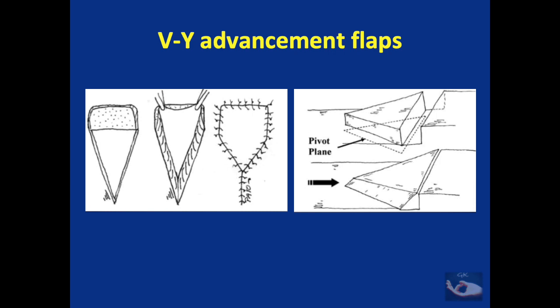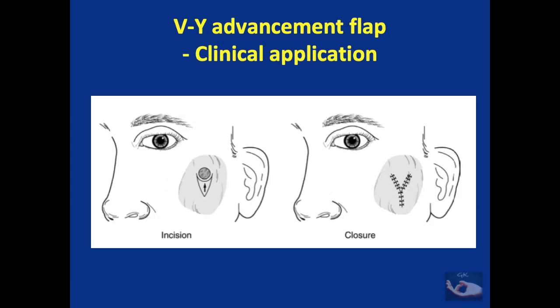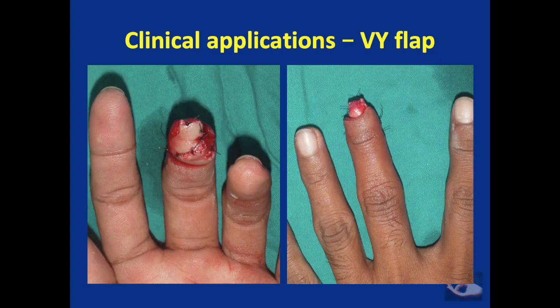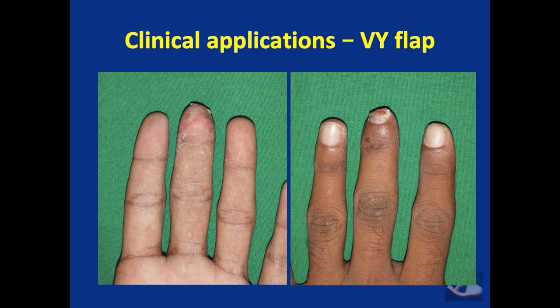There is no actual pivot point for this flap but there is a pivot plane — the subcutaneous pedicle of the V flap forms the plane which prevents the flap from advancing further. The VY advancement flap finds use in resurfacing defects on the face, cheeks, and sacral pressure sores. The flap is also used widely in resurfacing fingertip injuries. This is an example of a VY flap done for resurfacing an amputation of the tip of the middle finger.